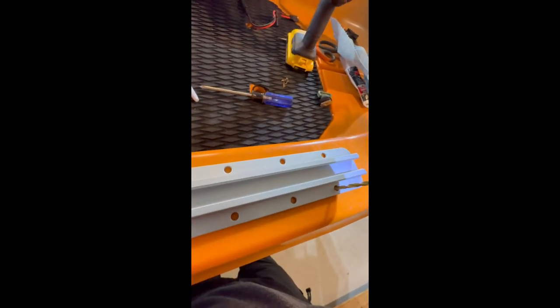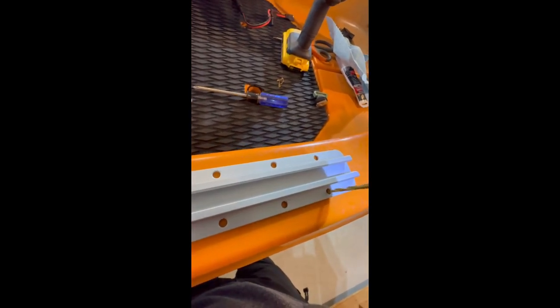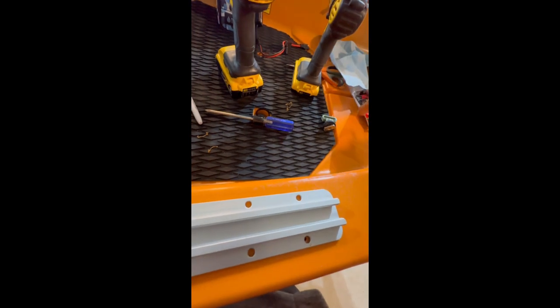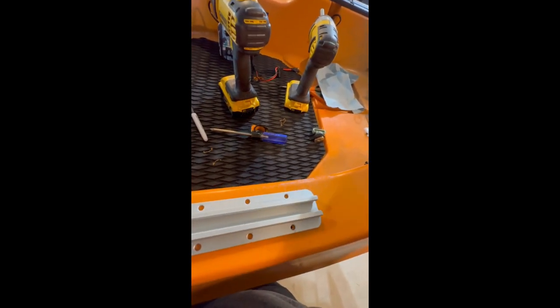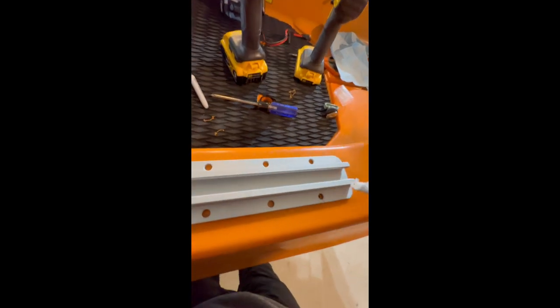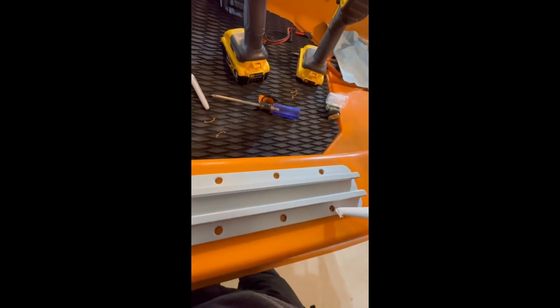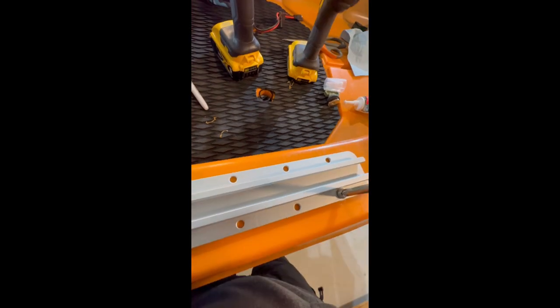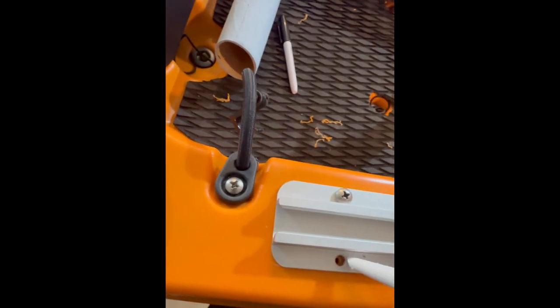So we'll do this corner next. Same thing. Just get some silicone. So I drilled out the six holes, and I'm just going to go ahead and add a little silicone to each of these.